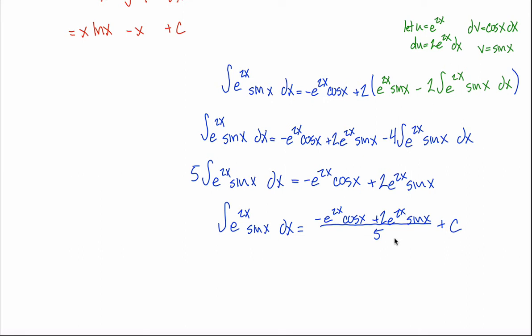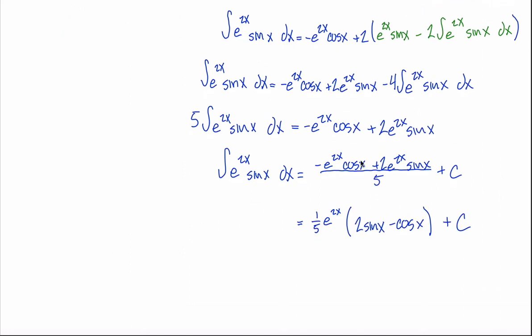I guess tack on a plus C if you want. You can rewrite this in different ways. You could factor out an e to the 2x. In fact, I think I'm going to just because I think it's so pretty to do so. You certainly don't have to rewrite this. This is perfectly acceptable. But I kind of like taking the 1/5th out in front and then the e to the 2x in both of these terms. That comes here. And then this cosine of x is negative, but this 2 sine of x is positive. So let's write 2 sine of x minus cosine of x. So we don't have this leading negative, again, just for aesthetic purposes, and get this as our answer.